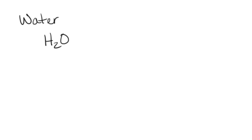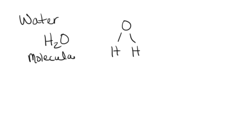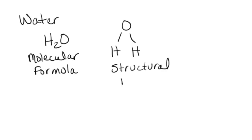Water's molecular formula and structural formula have been drawn a number of times already. When we say H2O, that is the molecular formula, which tells us which elements are involved and how many atoms we have of each one. The structural formula gives us more detail — it tells us exactly where covalent bonds are formed, and we can easily tell whether these are single, double, triple, or any other type.